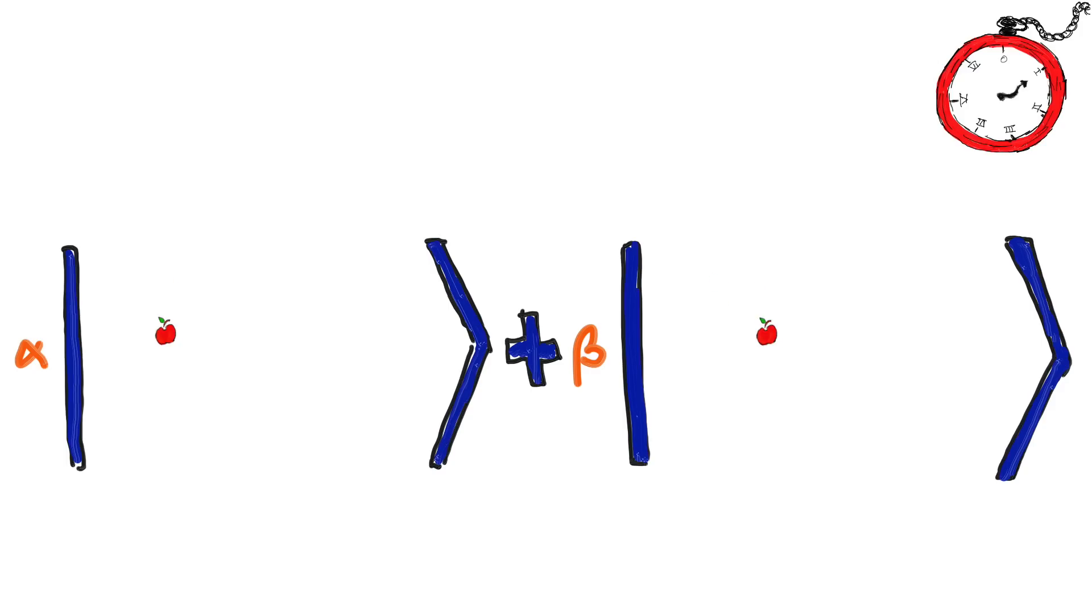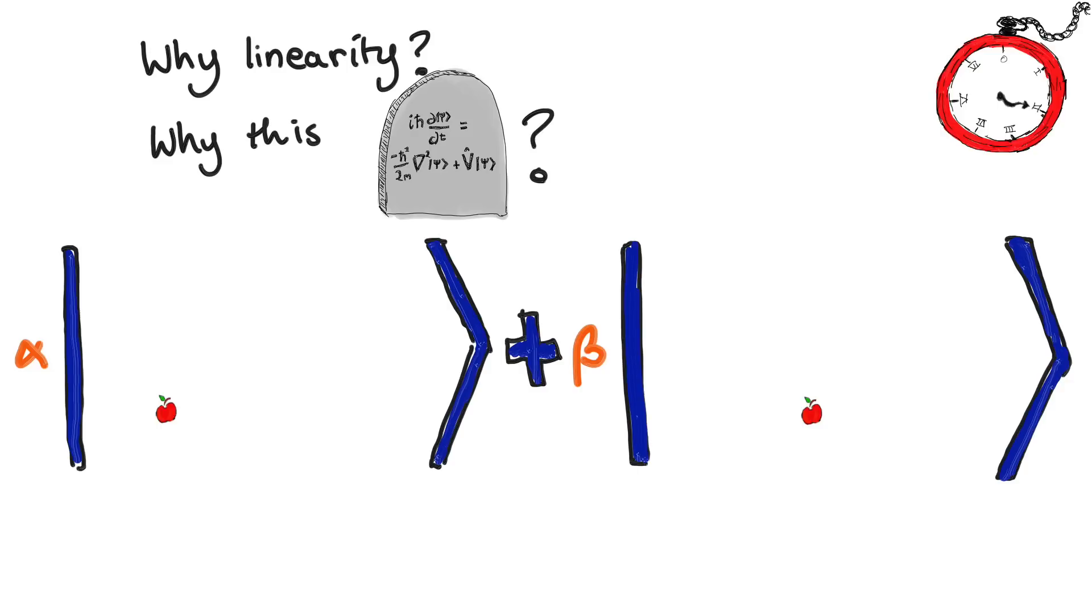Meanwhile, everything else evolves perfectly linearly in time, unaware of the other branches of the superposition. If you want to know where linearity comes from and what might have inspired the Schrödinger equation in the first place, click this link to the next video.